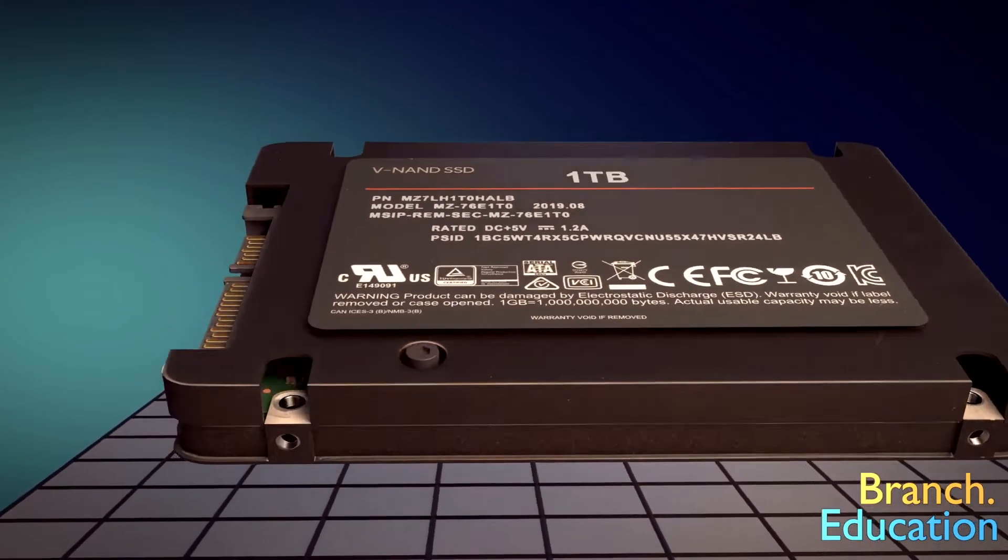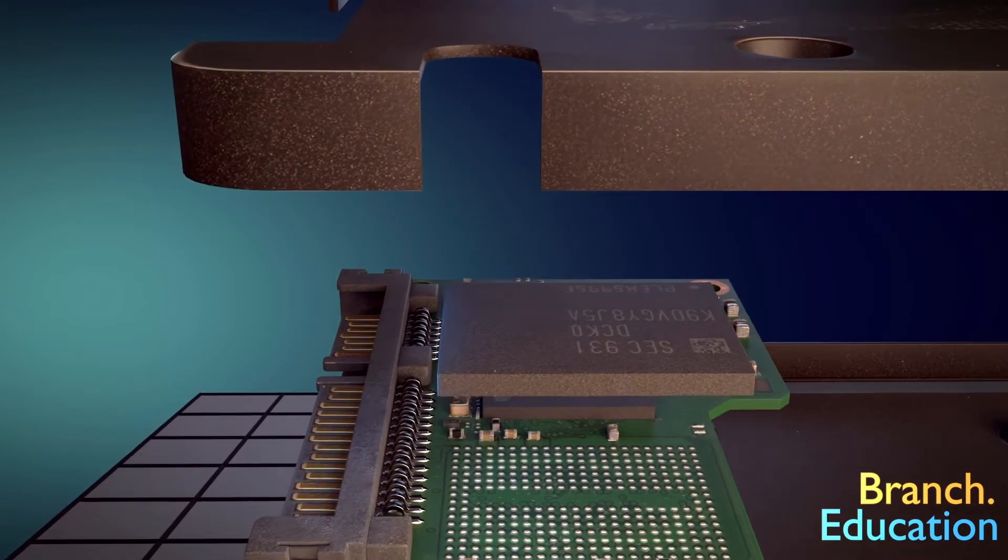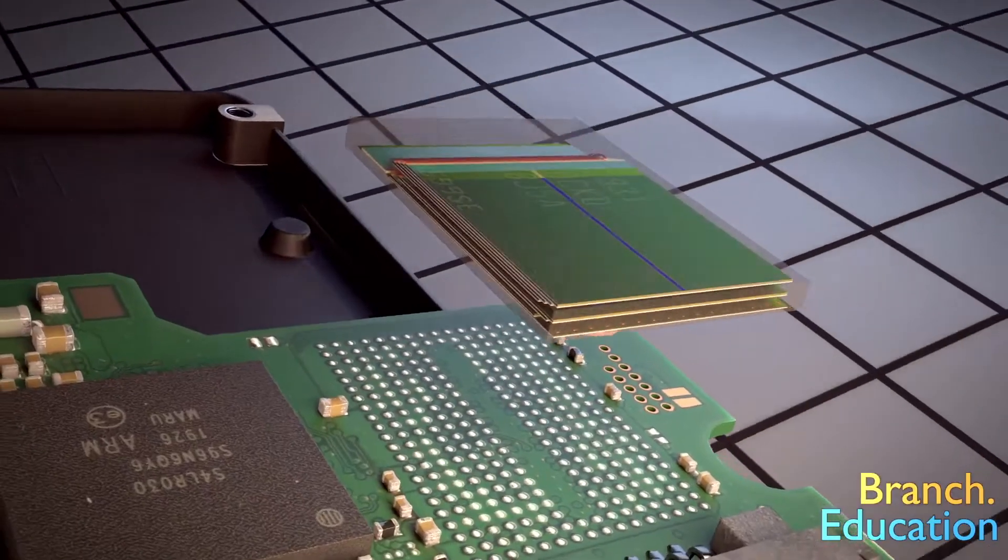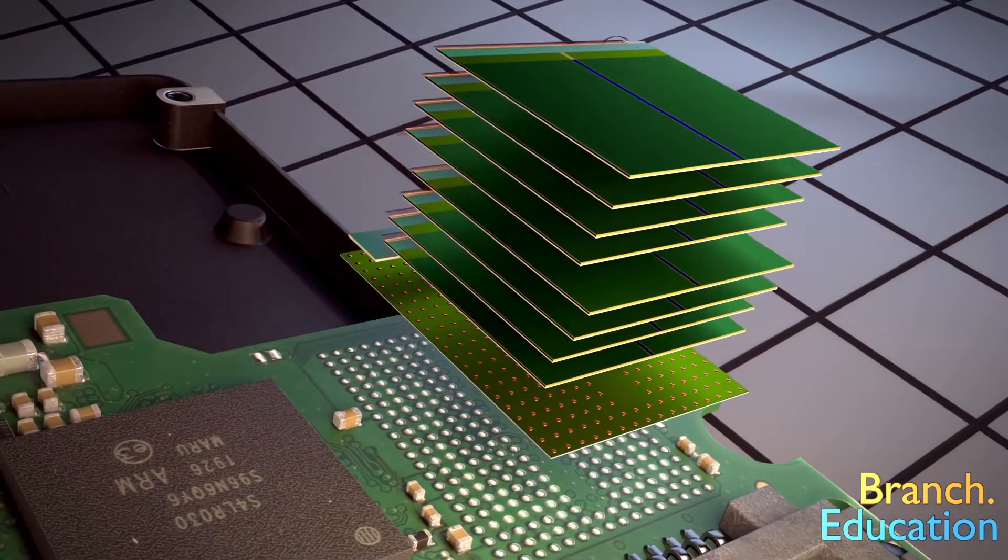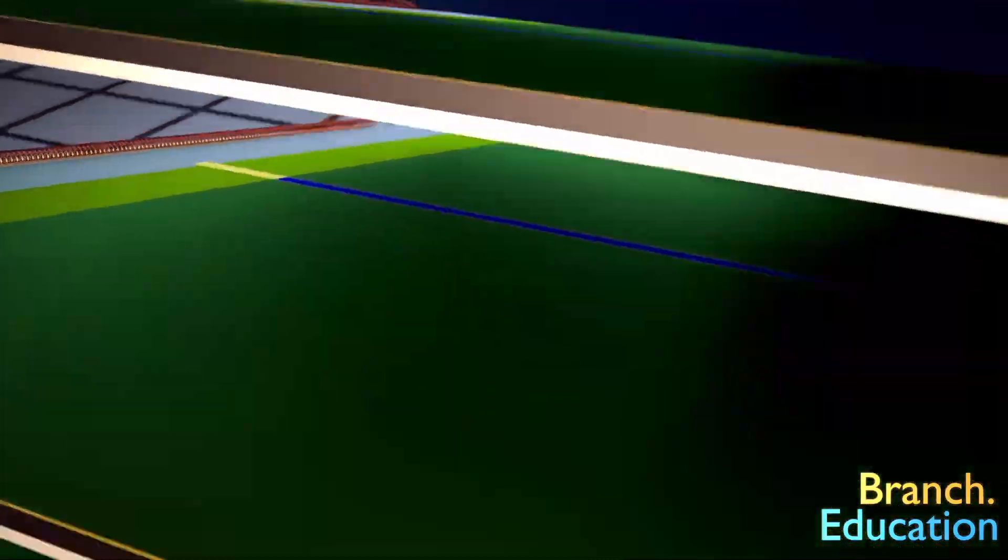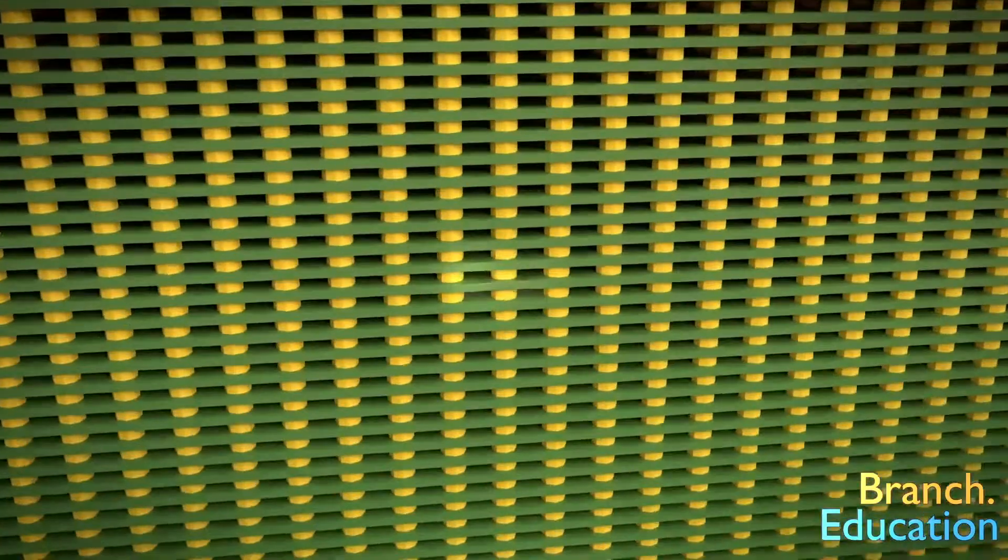To understand how memory works, we will examine this one terabyte memory chip, within which there is a microchip that can store about three weeks' worth of video and TV shows. When we zoom into that at a microscopic level, we find one specific memory component called a charge trap flash.